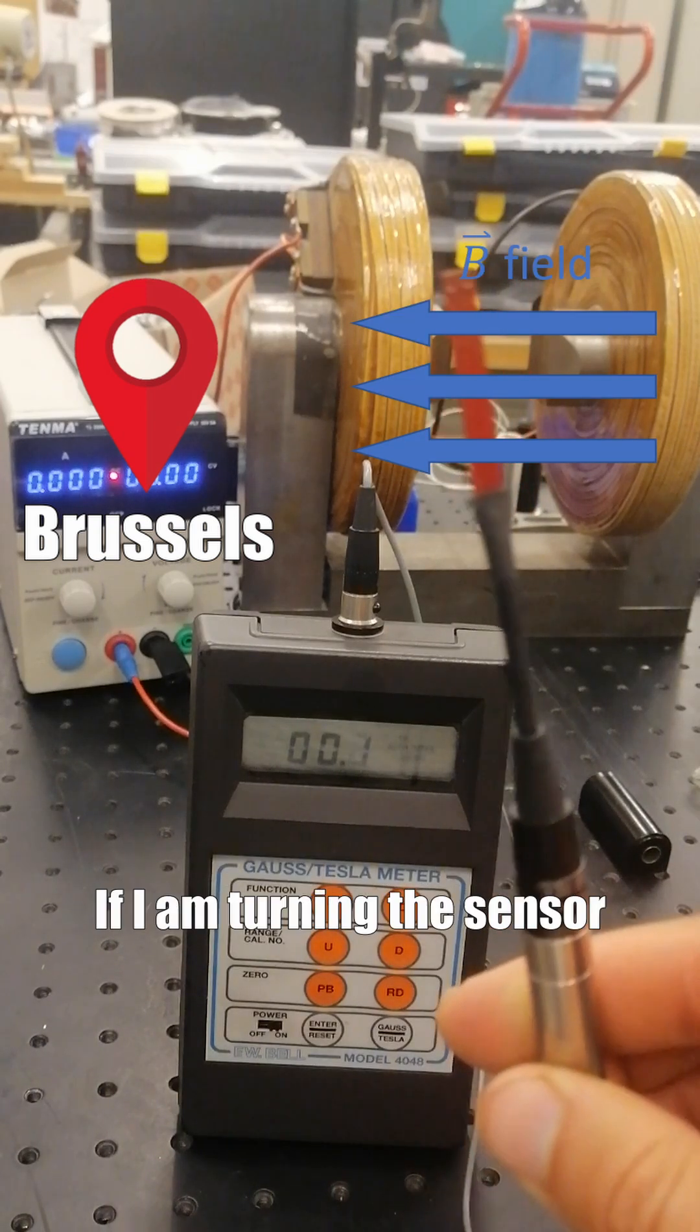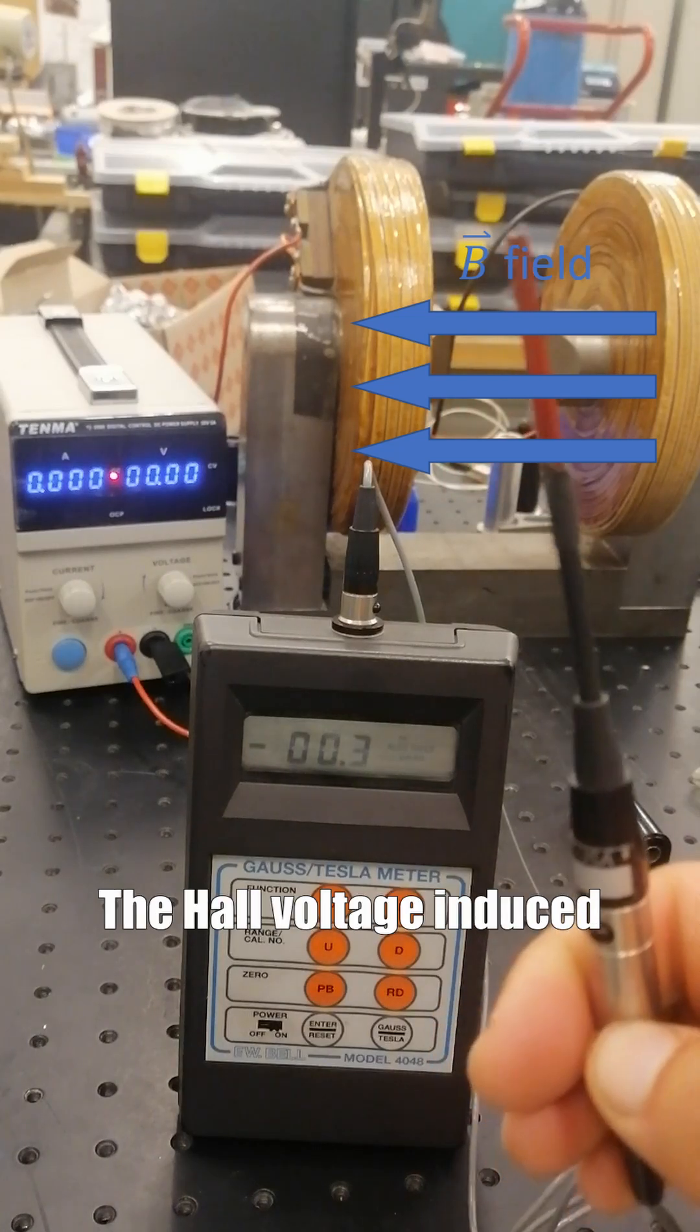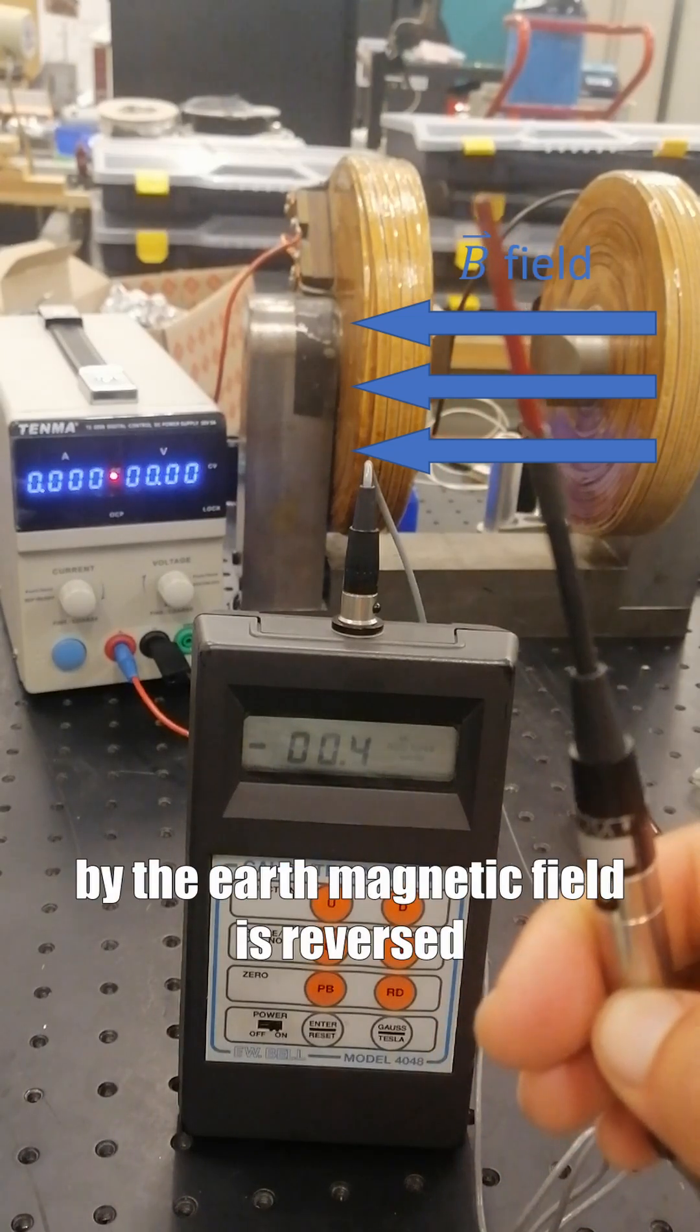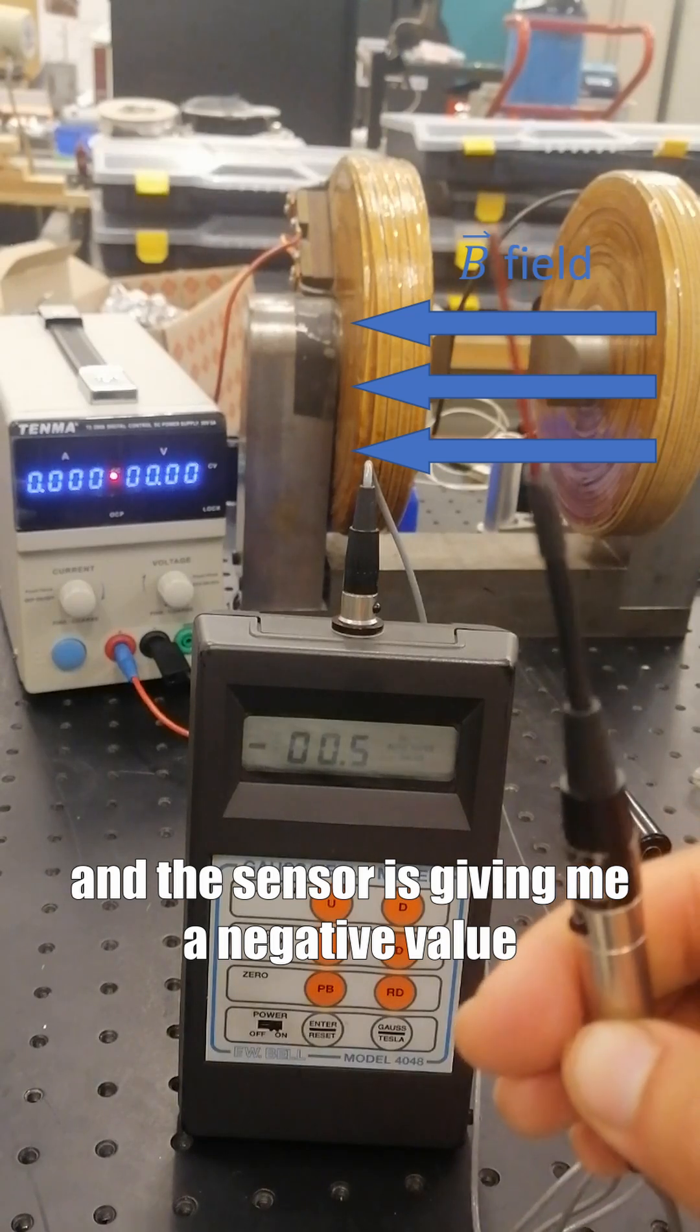But it's quite sensitive. If I'm turning the sensor, the Hall voltage induced by the Earth's magnetic field is reversed, and the sensor is giving me a negative value.